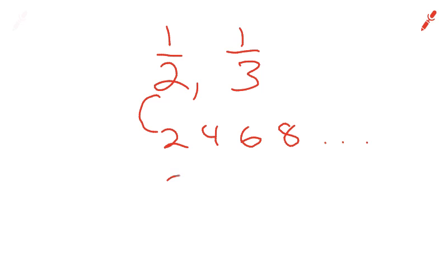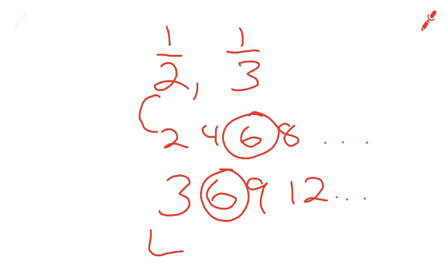Multiples for 3 would be 3, 6, 9, 12, and so on. And so our LCD, our lowest common denominator, is the 6. And you need to write that in the blank.